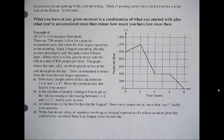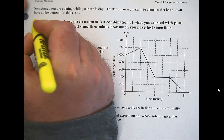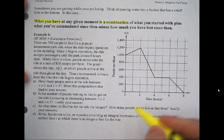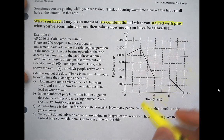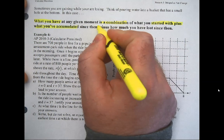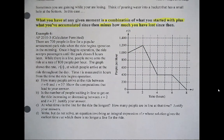Let's finish up our notes — we have a couple more free response questions to go through. Just a reminder: what you have is a combination of what you started with, plus what you've accumulated, minus how much you've lost. That makes sense: where did you start, how much did you gain, how much did you lose? That tells you how much you still have.